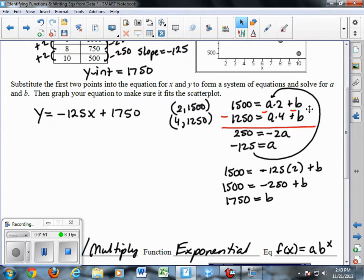To solve this system of equations to figure out what a and b are, I can subtract the second equation from the first, getting 250 equals negative 2a. The b's cancel out. Or negative 125 equals a. And then I can substitute the negative 125 for a back in the first equation and solve it for b and find out I get 1750. So that's another alternative way to solve the equation.